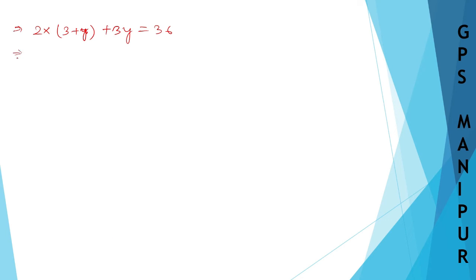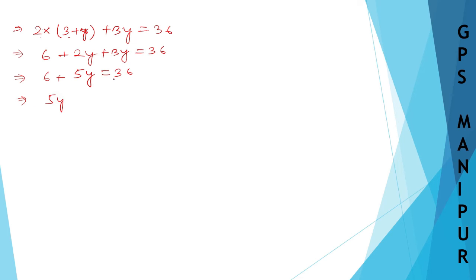Expanding: 2 into 3 is 6, and 2 into y is 2y, plus 3y equals 36. So 6 plus 5y equals 36. Transfer 6 to the other side: 5y equals 36 minus 6, which is 30. Therefore y equals 30 divided by 5, which is 6.